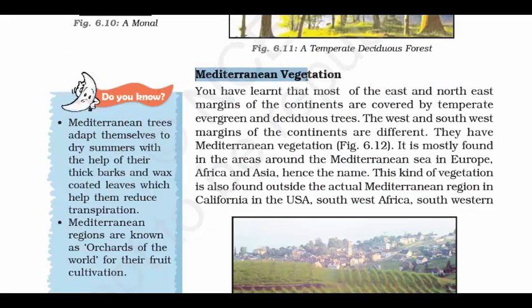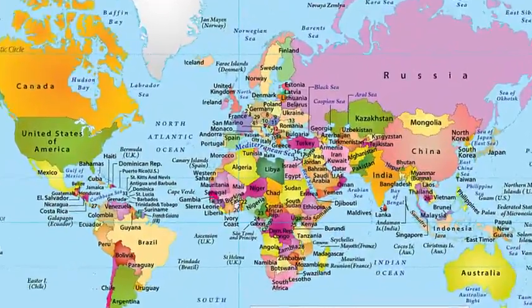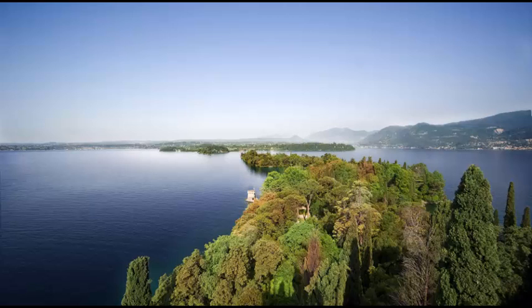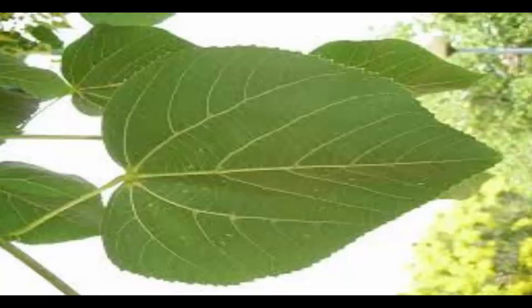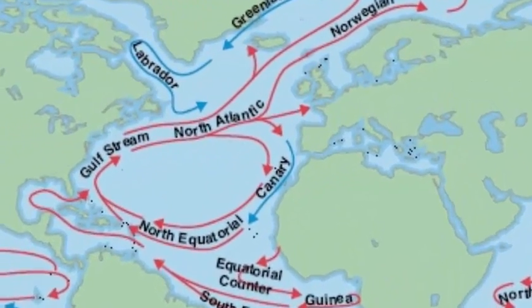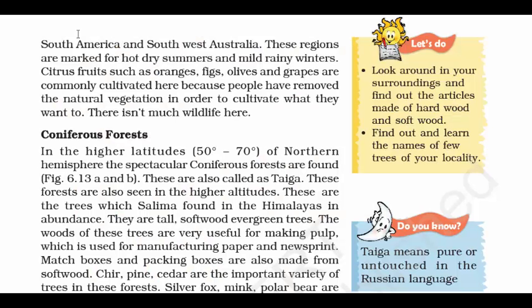Moving on to Mediterranean Vegetation. Mediterranean refers to the region near the Mediterranean Sea, which is enclosed by the lands of Europe and Africa. Vegetation means plants considered collectively. So Mediterranean vegetation is the collective plant life of the Mediterranean region. The vegetation consists of broad-leaved evergreen shrubs, bushes, and small trees. The climate here features hot, dry summers and mild, wet winters. A similar environment is found in southwestern North America, southern Africa, and parts of southwestern Australia. These places are famous for citrus fruits such as oranges, figs, olives, and grapes — that's why you see many vineyards there. There isn't much wildlife here.